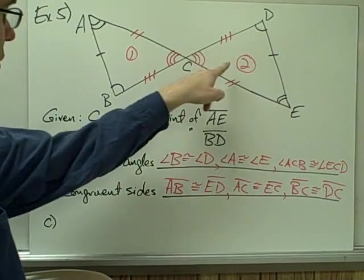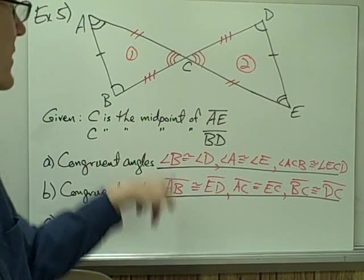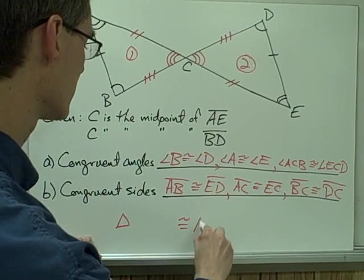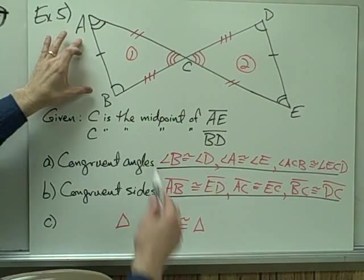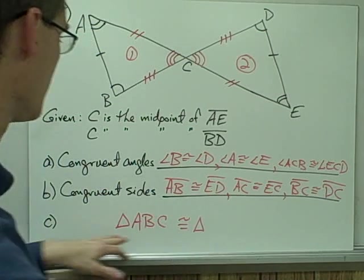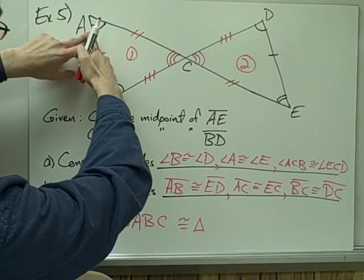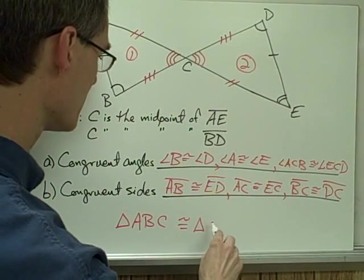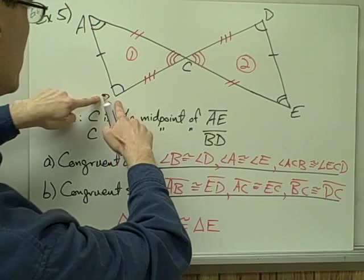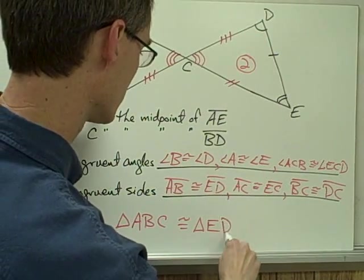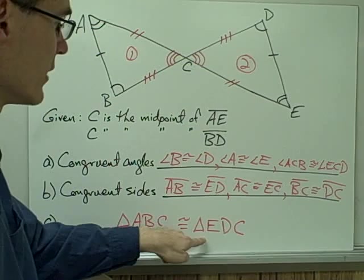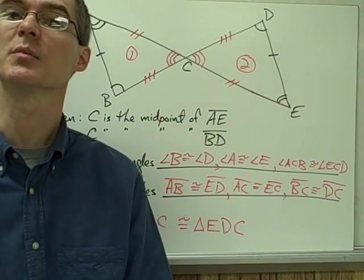Now I can write my triangle congruence statement. I want my angles matched up correctly. Triangle ABC — angle A has double hash marks, so I want E first; angle B is single curve mark so D is next; and C and C match up — so triangle ABC is congruent to triangle EDC. And there's my congruence statement for that example.